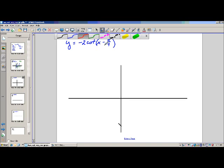What value of x would make this argument 0? If you thought or said pi over 4, you're exactly correct. So the phase shift or the horizontal shift is pi over 4.